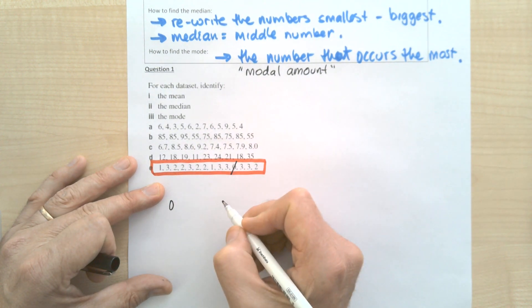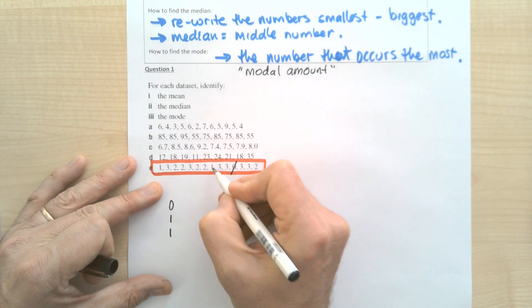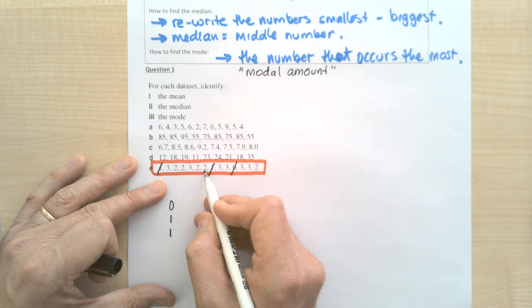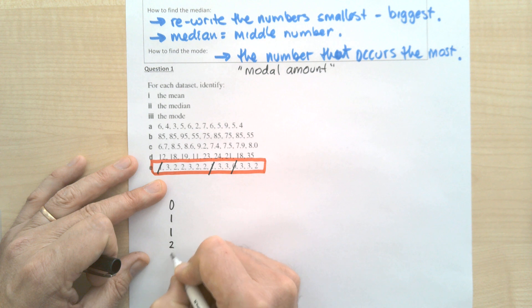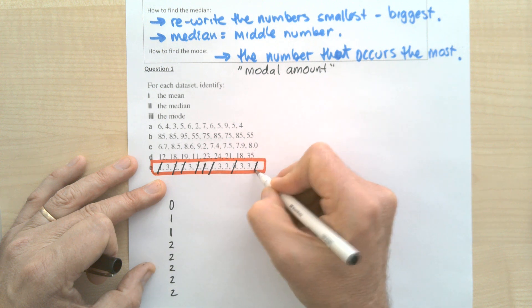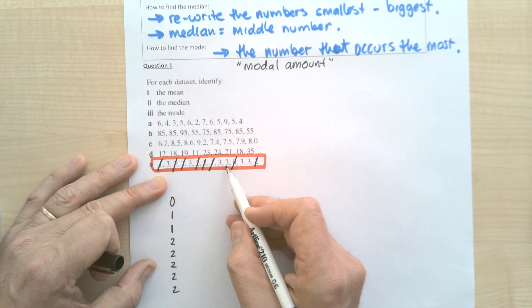So I've got zero. There are two ones. How many twos have I got? One, two, three, four, five twos. And the rest are threes—there's one, two, three, four, five, six threes.